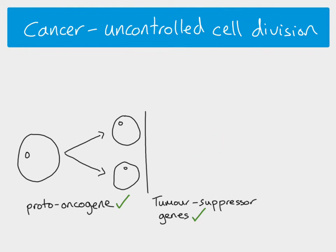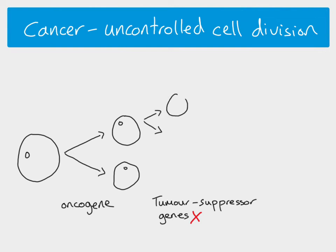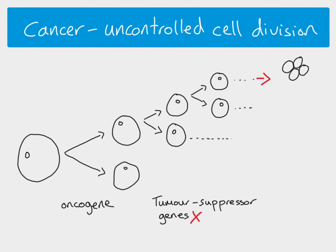In cancer, something causes those proto-oncogenes to mutate and become what's called an oncogene, and when that happens, cell growth and cell division becomes uncontrolled. We also see that the tumor suppressor genes stop working. As a result of both of these things, nothing is stopping the cell cycle, so we see continued, uncontrolled cell division. There's nothing stopping it — the tumor suppressor genes aren't regulating or preventing division — so we end up with a large mass of cells, which is what we call a tumor.